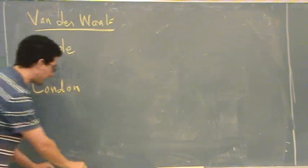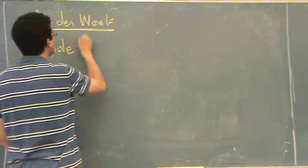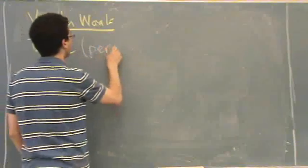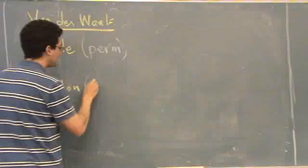Okay? Dipole and London. The dipole is permanent. London is induced.